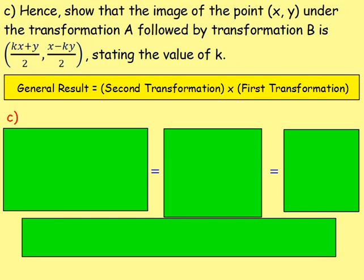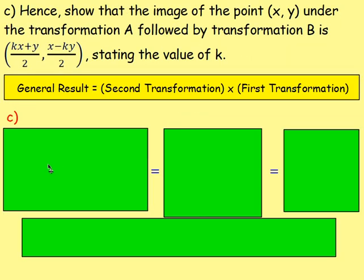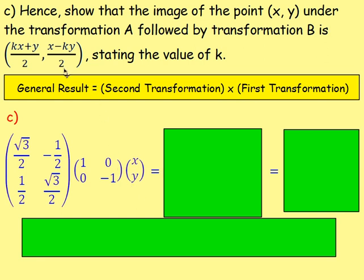Part C: show that the image of (x, y) under transformation A followed by transformation B is (kx + y)/2 and (x − ky)/2, and state the value of k. To work out the result, multiply the transformations in reverse order. Transformation A followed by B means B comes first, so we compute: matrix B × matrix A × point [x; y]. That is [√3/2, −1/2; 1/2, √3/2] × [1, 0; 0, −1] × [x; y].